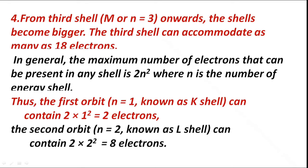From the third shell M, or n = 3 onwards, the shells become bigger. The third shell can accommodate as many as 18 electrons. In general, the maximum number of electrons that can be present in any shell is 2n², where n is the number of the energy shell.